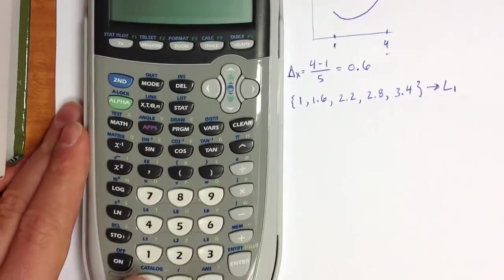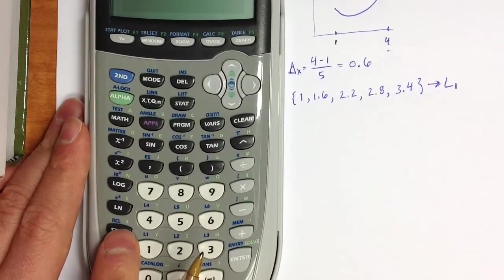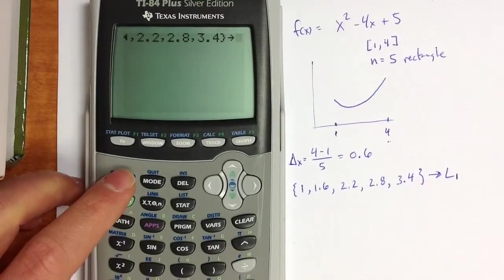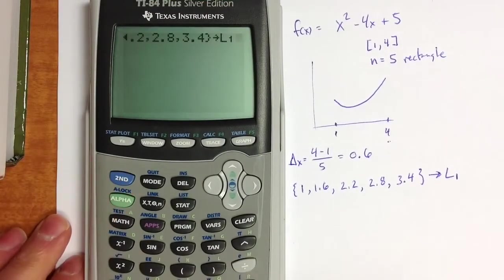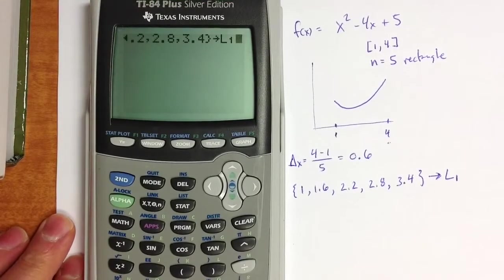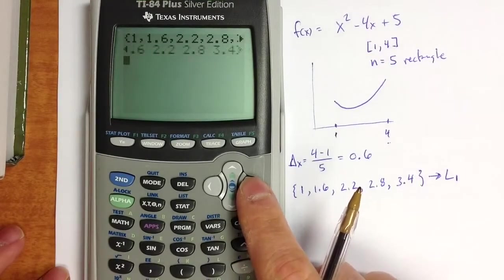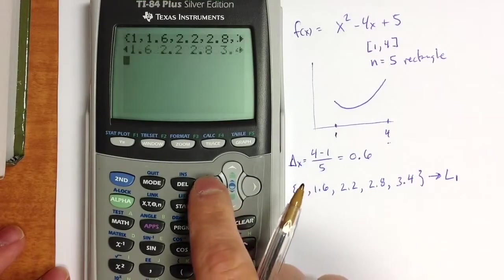The store key is next to the 1. So I'm going to hit that, and then store in list 1, which is the second command above the 1 key. So that enters our values into our list. We can scan through and make sure that what we have in there is what we intended.